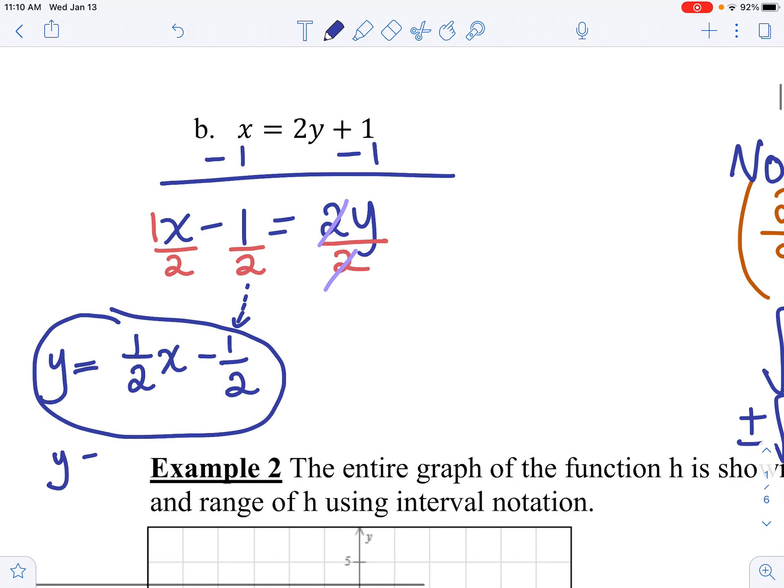I wanted to write it this way because you guys have seen this before. This is y equals mx plus b, isn't it? Where m, the slope, is half, and b, the y-intercept, is negative 1 half. What kind of function is this? This is a linear function. So some special functions have names. There's linear, quadratic, cubic, square root function, absolute value functions. And we're going to look at a bunch of function families in section 1.6.